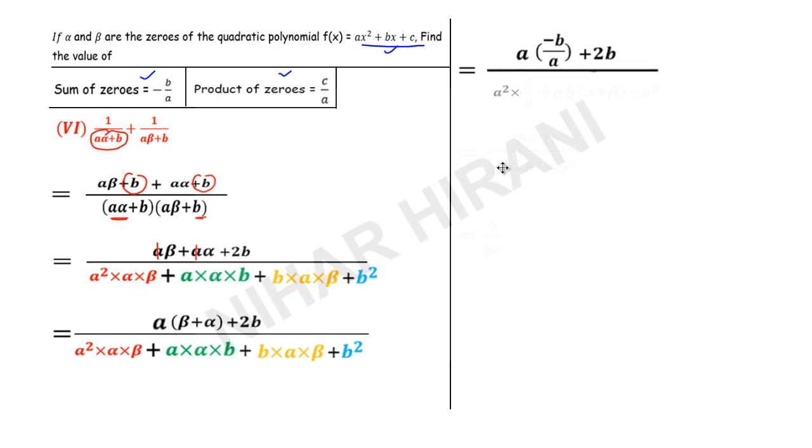A square, now alpha times beta is product of zeros, c upon a. Plus I have taken ab common from these two. So if I take ab common, I will be left over with alpha plus beta plus b square.